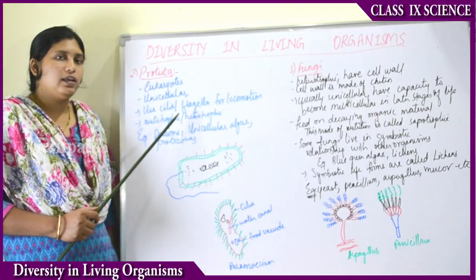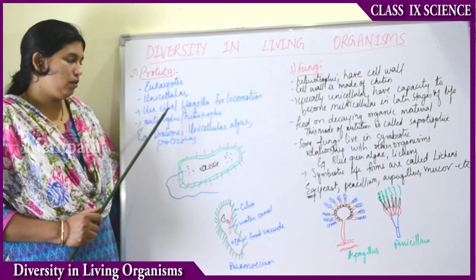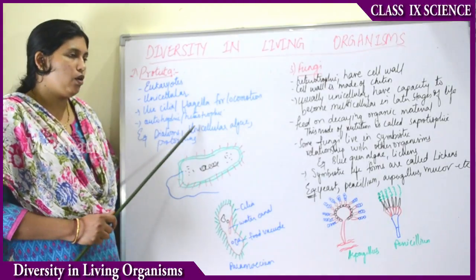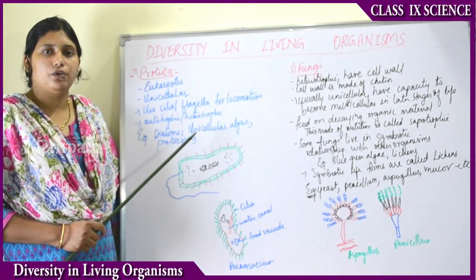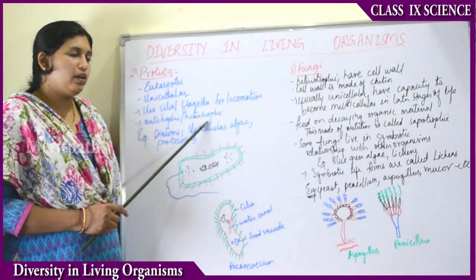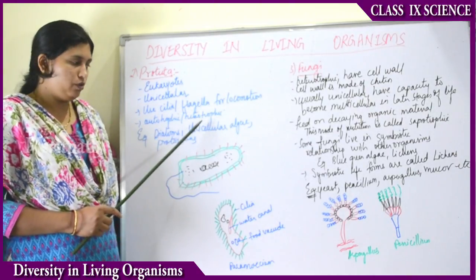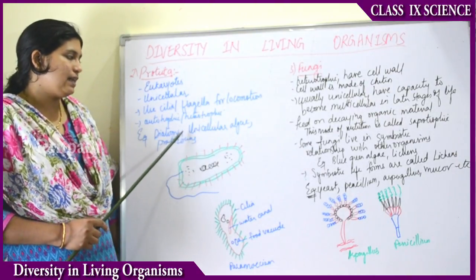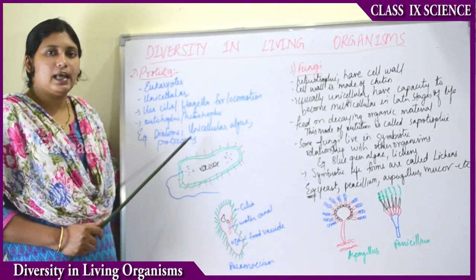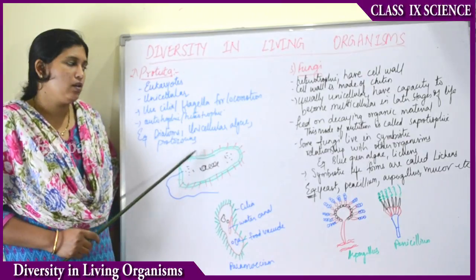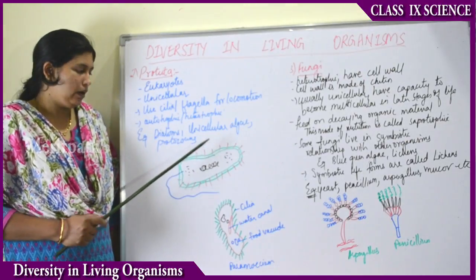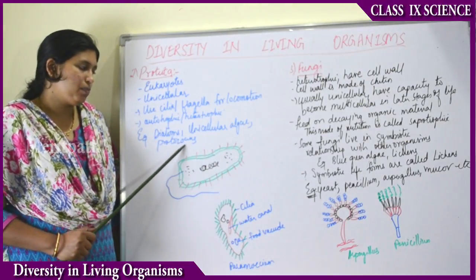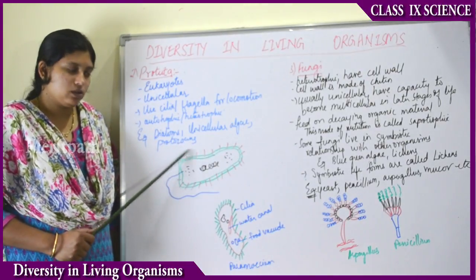Protista can be either autotrophic or heterotrophic. They can prepare their own food, or sometimes they depend on others for their food. Examples include diatoms, unicellular algae, as well as the protozoans.